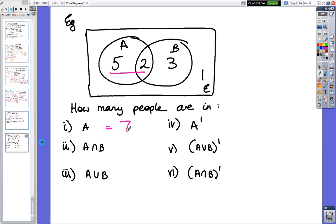If I'm looking at A and B, so that means overlap, so it's just that number. A or B equals A, B and the overlap, so it's 5, 7, 10, so I've got 10 people.